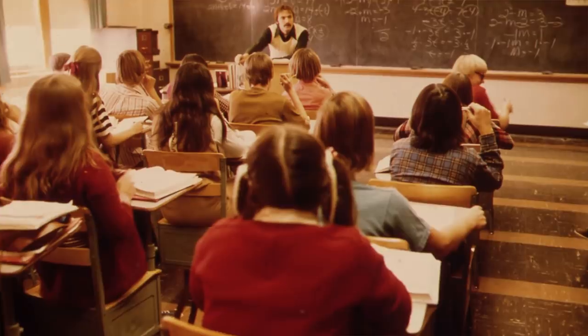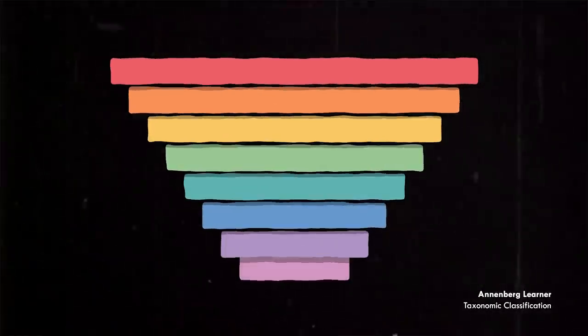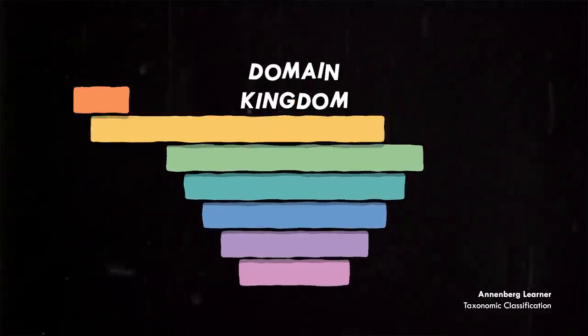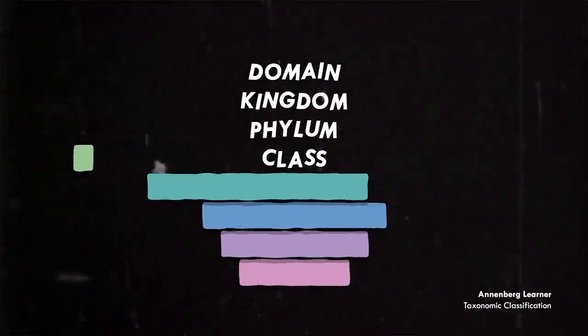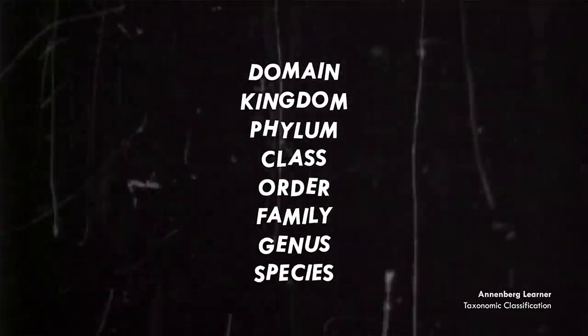So in high school, you might remember having to learn taxonomy, which is this hierarchical labeling system. There's domain, kingdom, phylum, class, order, family, genus, species, and me falling asleep in biology class.